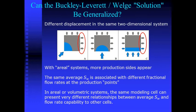These diagrams show that aerial or volume trick systems are subject to a noticeably different behavior from what we observed in the case of linear systems. In those cases, the same model cell can present very different relationships between average water saturation and flow capacity to other cells in the system.